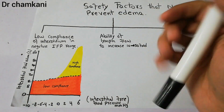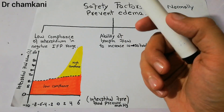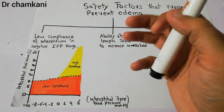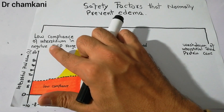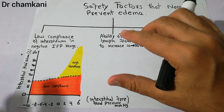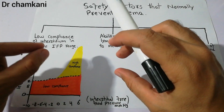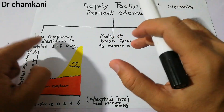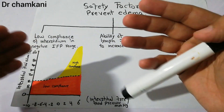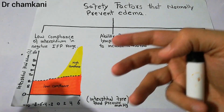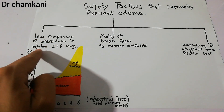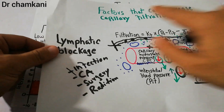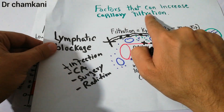The first safety factor is the low compliance of interstitium in the negative interstitial fluid pressure range. Normally, when the interstitial fluid pressure is in the negative range, the interstitium will have low compliance. To understand this, we need to discuss the factors that can increase the capillary filtration rate.